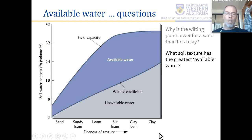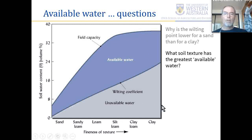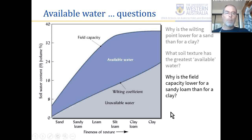What soil texture has the greatest available water? Somewhat counterintuitively it's not the clay. It's where there is the greatest difference between wilting point — called wilting coefficient in this diagram — and field capacity. On the diagram, the largest vertical distance between those two lines corresponds to a silt loam, which has a high volume of pore sizes in the range 0.1 to about 15 microns — between field capacity and permanent wilting point for croplands.